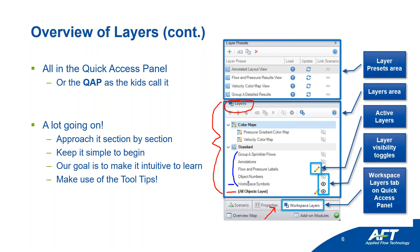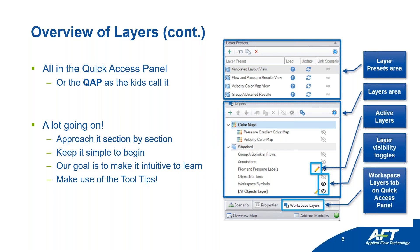Then you have all the custom layers above it. For example, the symbols layer shows workspace symbols — ampersands, X's, little red letters in your model. The 'flow and pressure labels' layer shows volumetric flow rate and pressure output associated with each pipe on the workspace as a label. You can toggle them on and off. There are standard layers which are always there, and color layers are a special section where you can't have multiple showing at once.